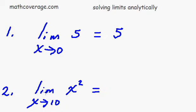Okay, we've got the limit of x squared as x approaches 10, so we just plug 10 in and square it, and we get 100. So that's pretty simple.